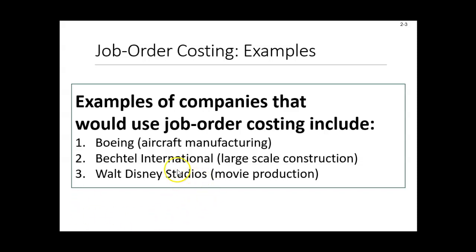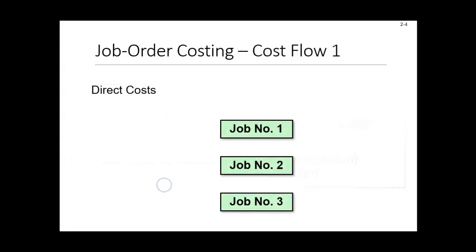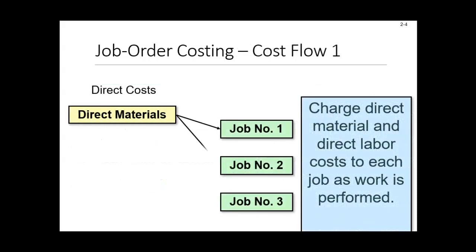Think about Walt Disney. They're making different types of movies. With a job order costing system, we focus on the cost that's going to be assigned to each movie that we produce.